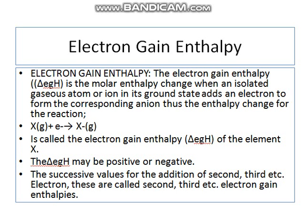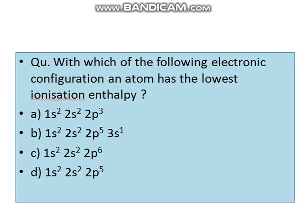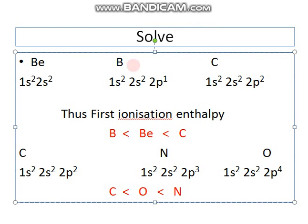Now let's look at the case of beryllium, boron, and carbon. Beryllium has a fully filled s orbital, so its ionization enthalpy is higher than boron. Boron has a partially filled p orbital. For nitrogen and oxygen: nitrogen has a half-filled 2p3 orbital, which gives it extra stability, so its ionization enthalpy is higher than oxygen. The 2p3 half-filled configuration makes nitrogen harder to ionize than oxygen.